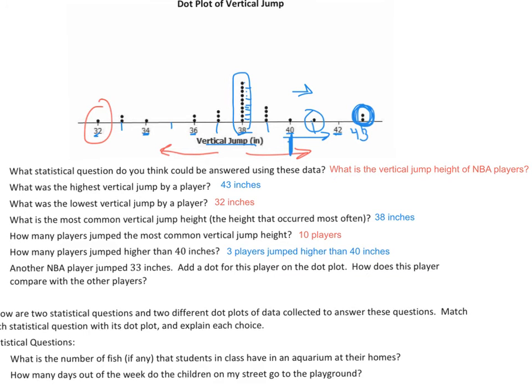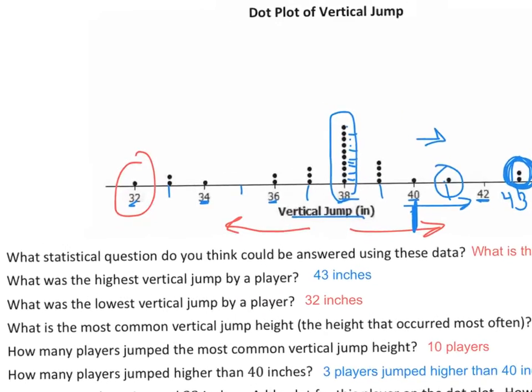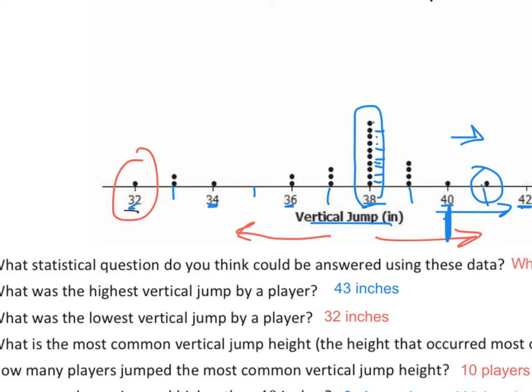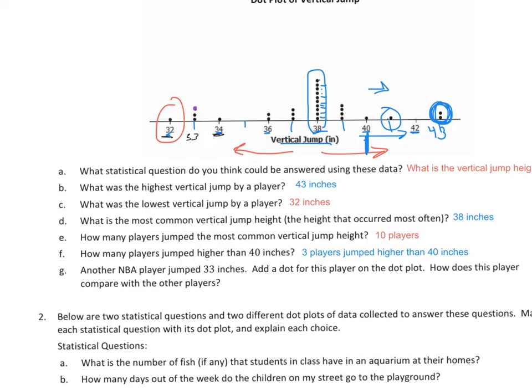And now the last one down here, and I'll zoom out a little. Another NBA player jumped 33 inches. Add a dot for this player on the dot plot. How does this player compare with the others? So I have to add a dot at 33 inches. And I'm going to come in, and I see that I have 32, 34. So this is going to be 33. So I'm going to add a dot. And actually what I'll do is I'll add that instead in a different color, purple, so I can see it. And we have to compare. It says, how does this player compare with the other players? Well, I can make a number of generalized statements here. But the one I'll go with is this player jumped the same height as two others and one inch higher than one other player because there's two of them here already. So he jumped the same as two other players, and he jumped higher than this person at 32 inches.